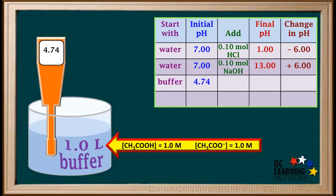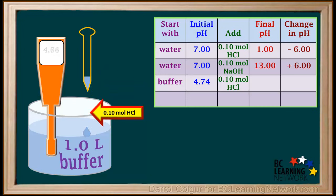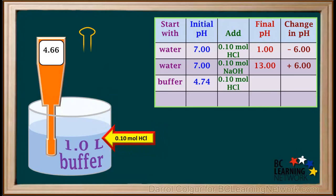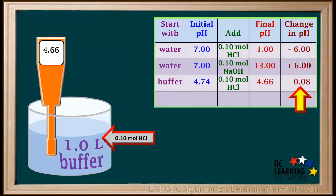Now we'll replace the water with a buffer solution. This particular solution contains 1 molar acetic acid and 1 molar sodium acetate. We see that the initial pH is 4.74. Now we'll add 0.1 mol of the strong acid HCl to this buffer solution. The pH has gone down, but only to 4.66. In going from 4.74 down to 4.66, the pH has dropped only by 0.08. This is a very small change in pH, compared with the very large drop of 6 pH units when 0.1 mol of HCl was added to unbuffered pure water.